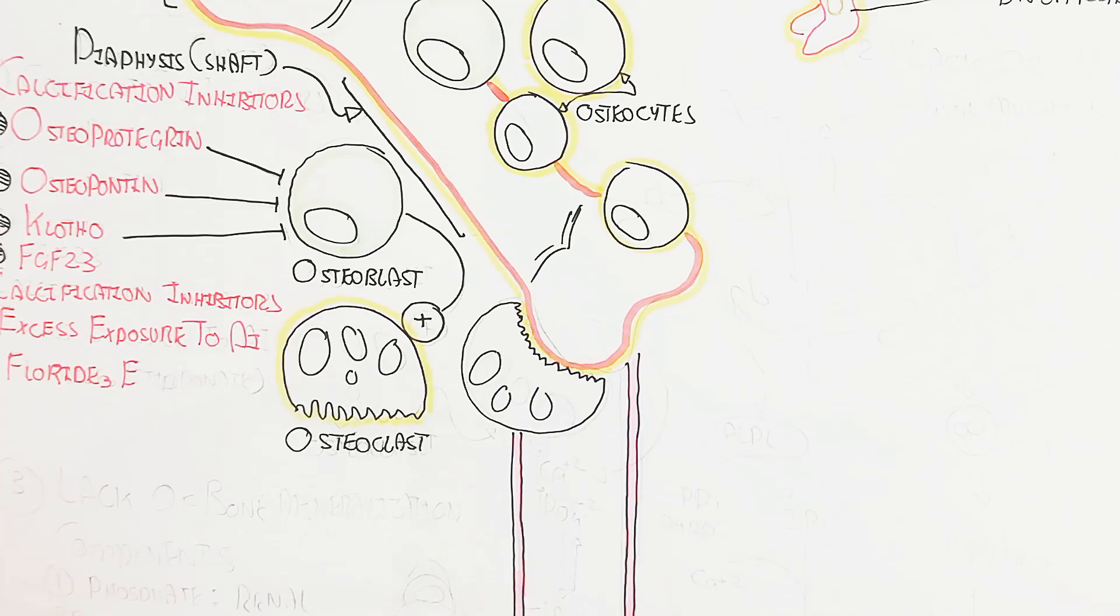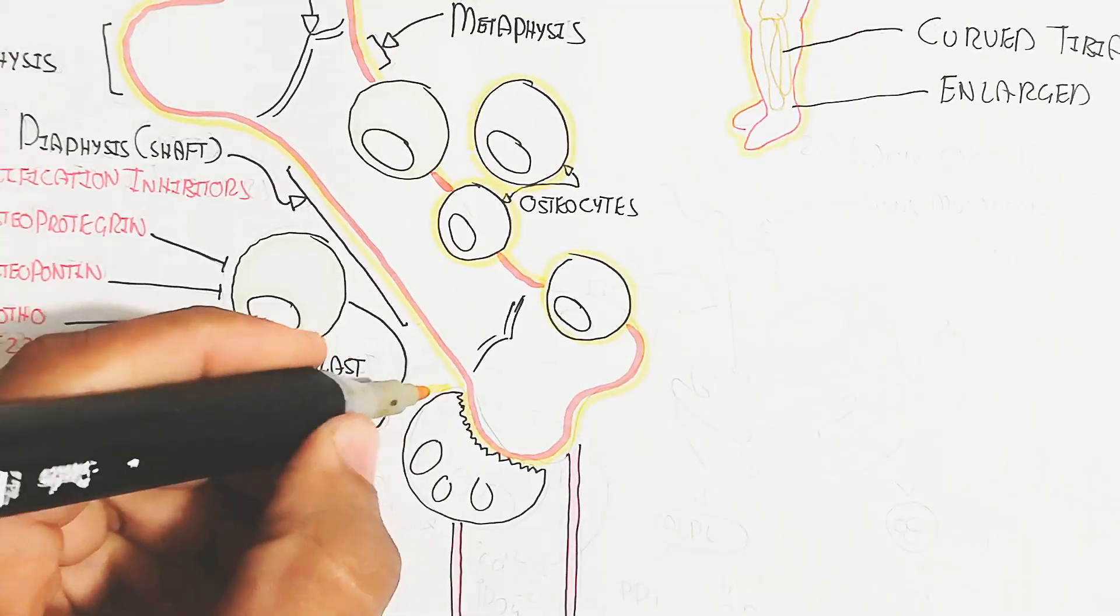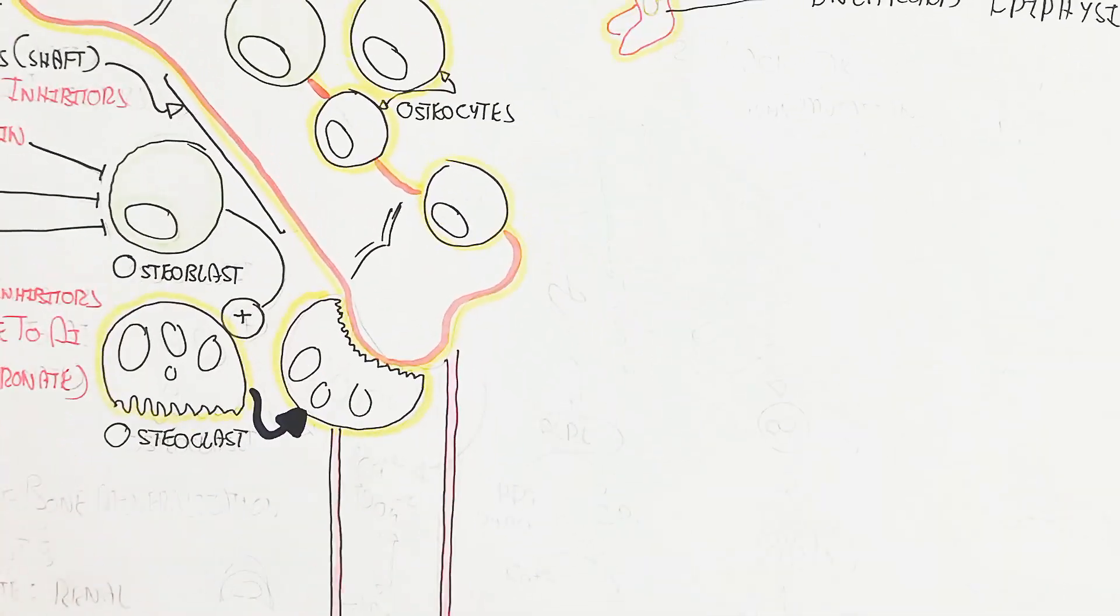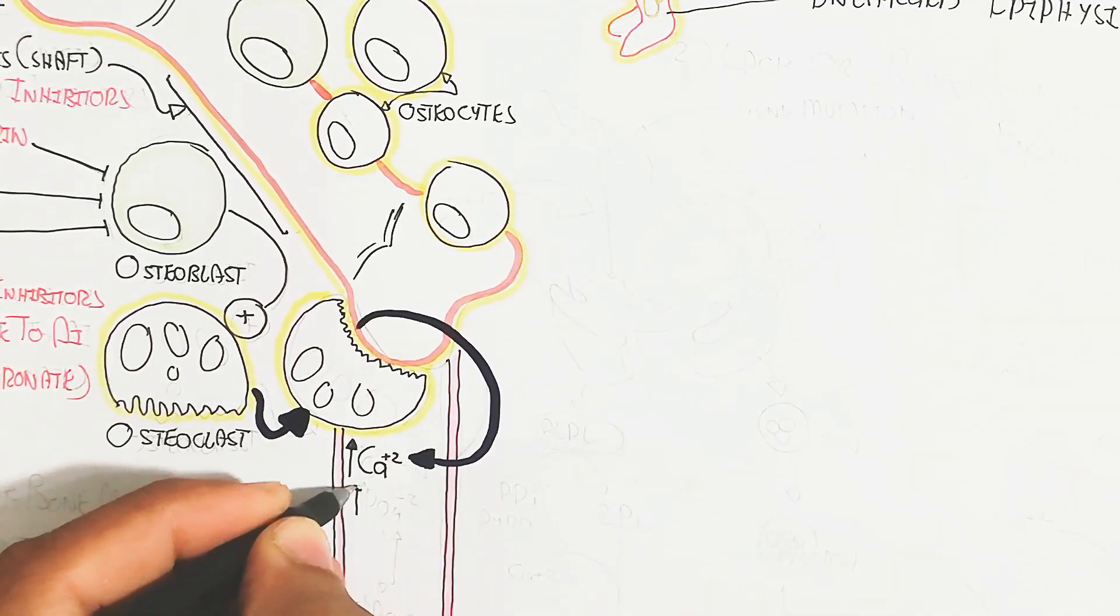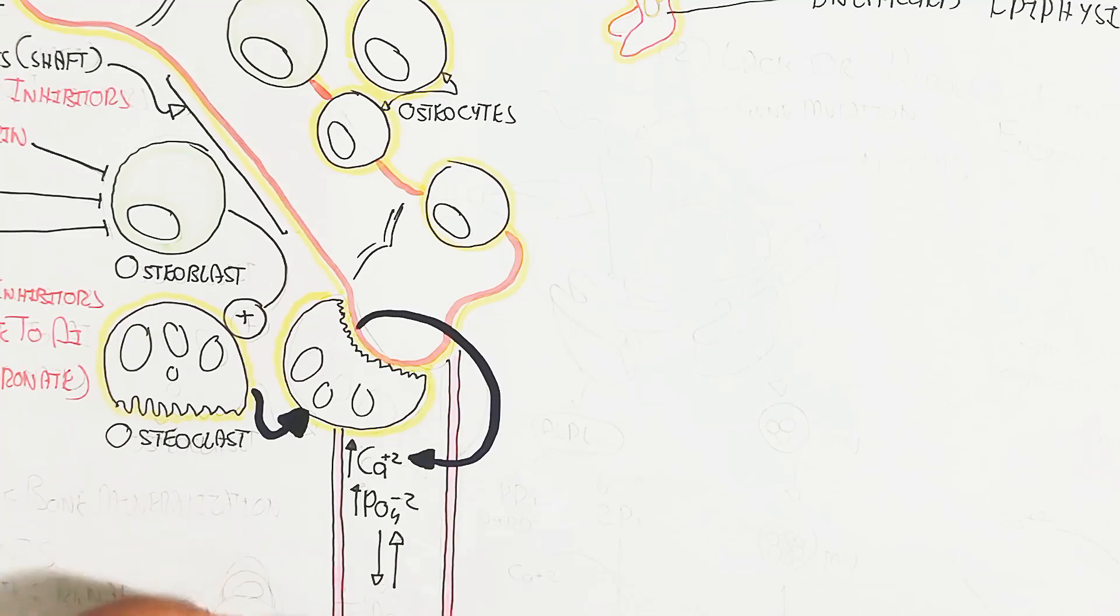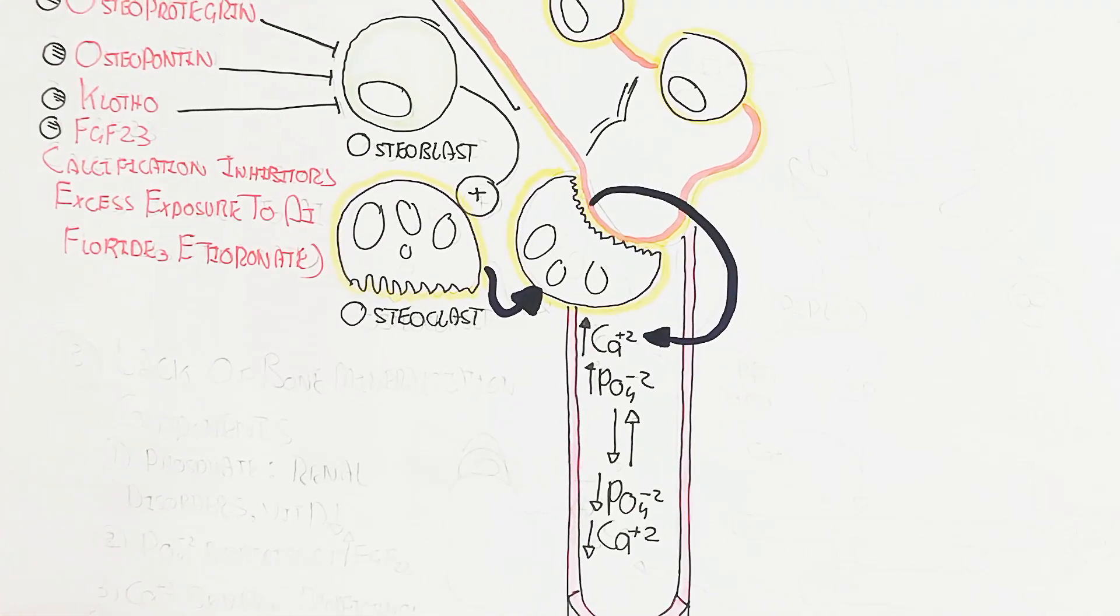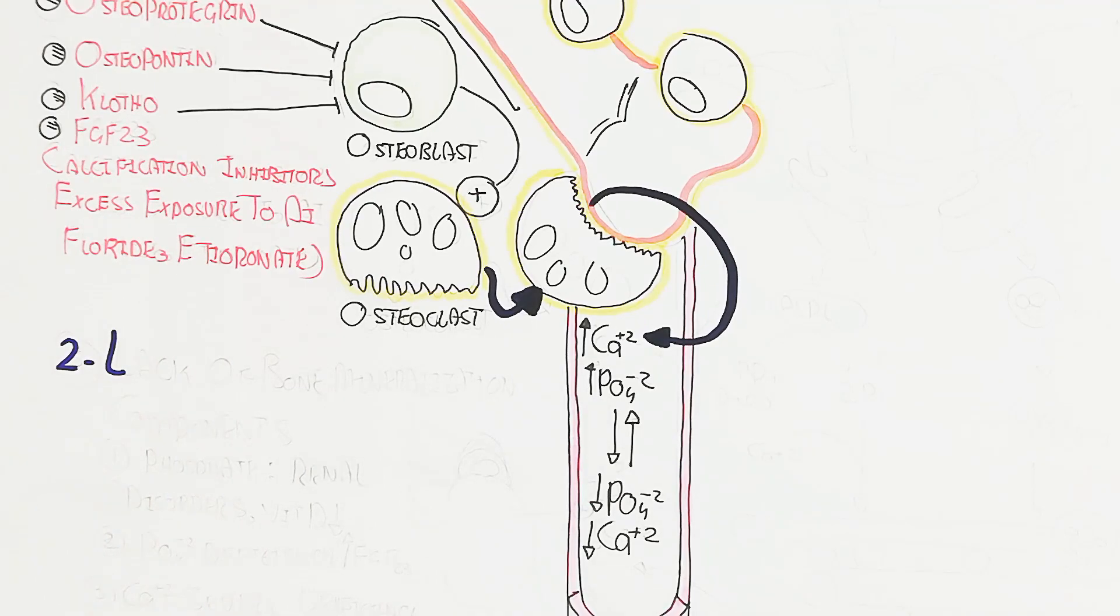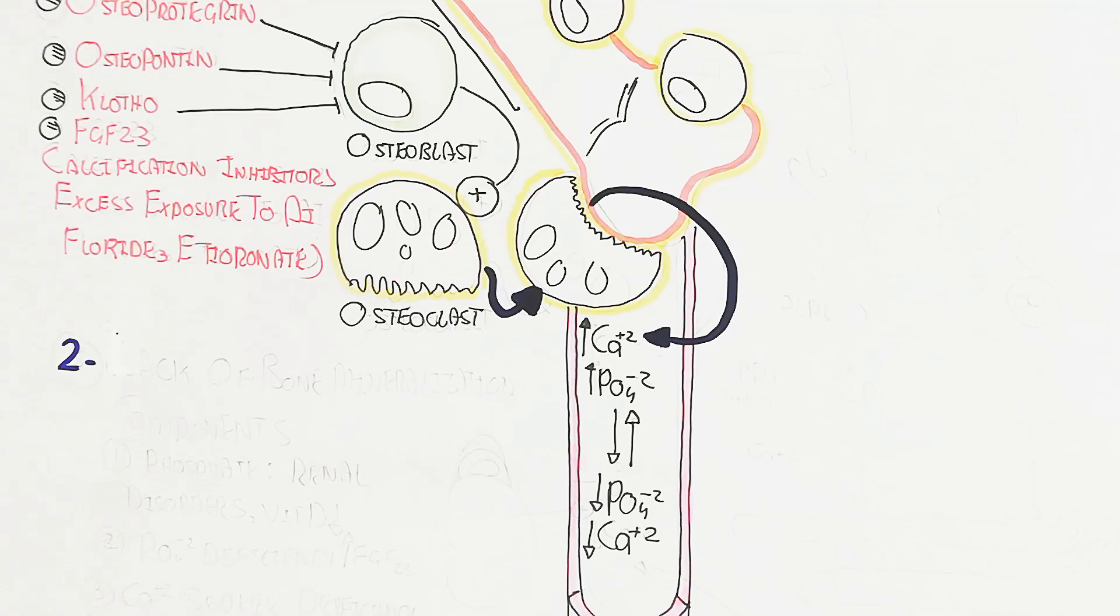Increase of calcification inhibitors will inhibit calcification, and exposure to aluminum, fluoride, and etidronate will lead to bone dissolution. In this way the bone dissolves due to osteoclast activity activation, due to the inhibition of osteoblast activation due to osteoprotegerin, osteopontin, and klotho activation.